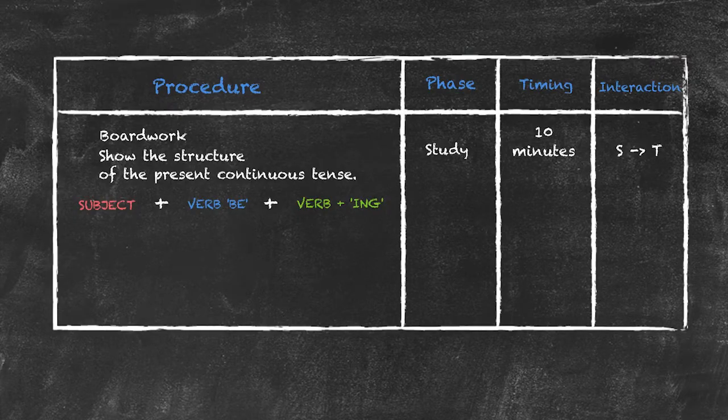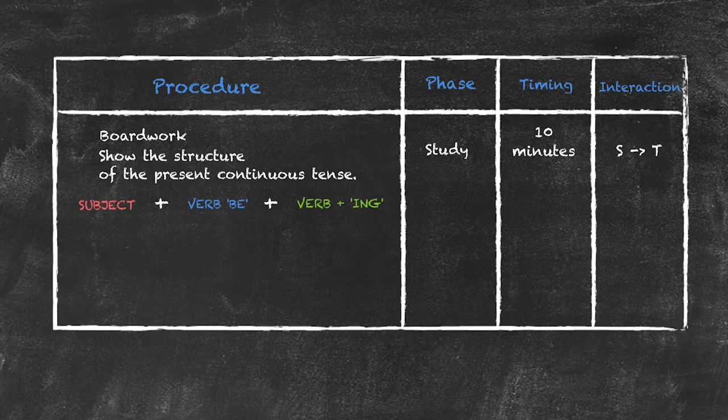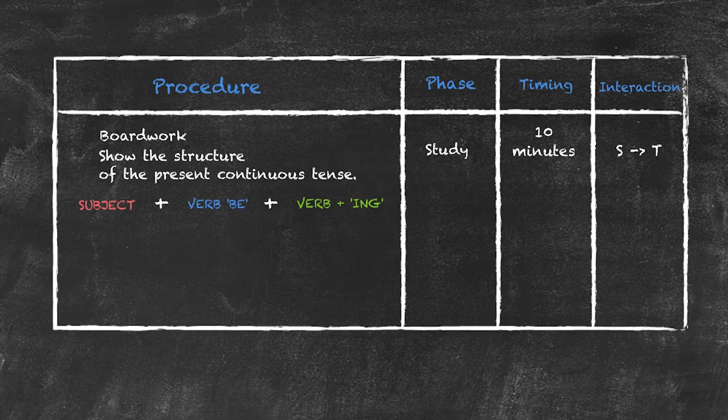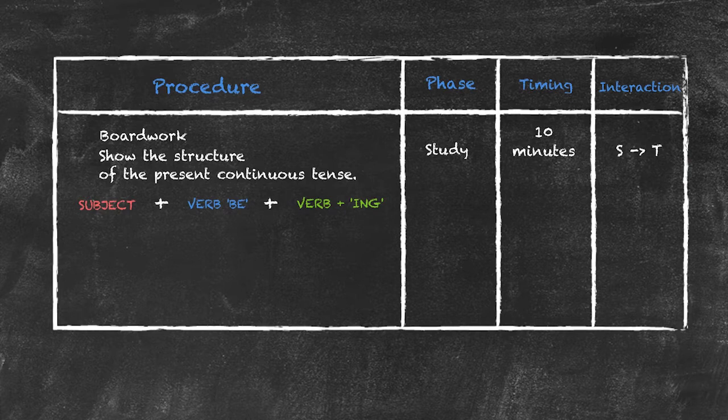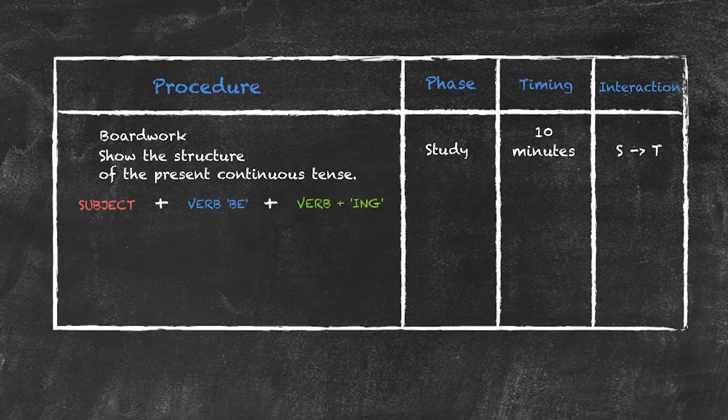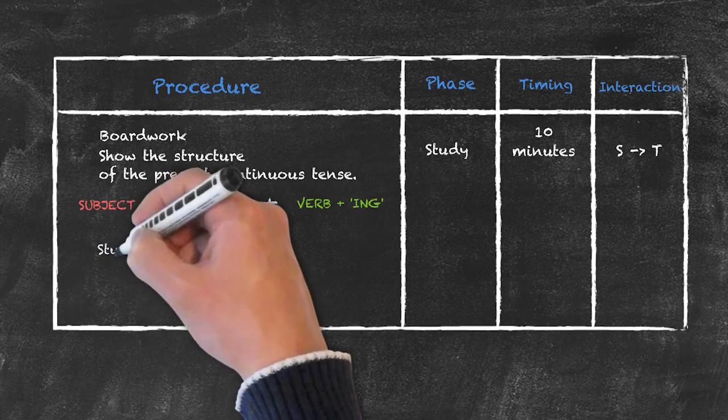So having elicited this particular structure, what I'm now able to do is move on to the actual study activities. Typically they will be in the form of worksheets to check that the students actually understand this information. So I might prepare three activities. They may not do them all, but for example I could prepare these three study activities.